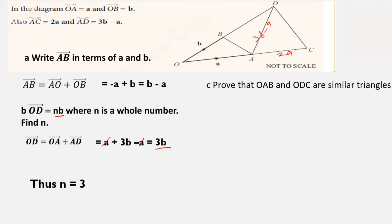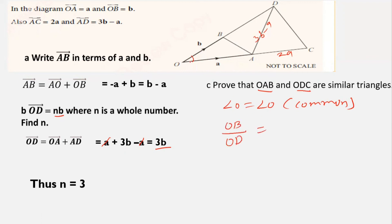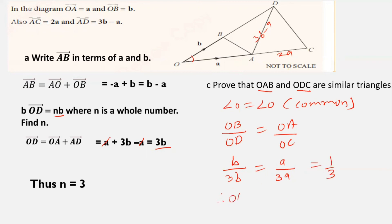Prove that triangles OAB and ODC are similar. Similar shapes have the same shape but different size — sides are in proportion and corresponding angles are equal. Angle O is common to both triangles. For sides in proportion: OB/OD = OA/OC. OB = b, OD = 3b, OA = a, OC = a + 2a = 3a. So b/3b = a/3a = 1/3. Since the sides are in proportion and the included angle is equal, triangle OAB is similar to triangle ODC by SAS similarity.